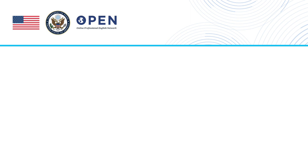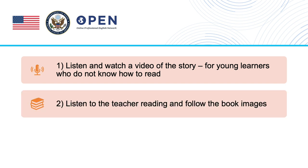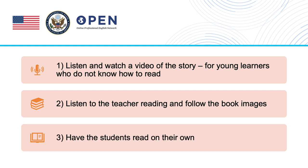Depending on the level of your students, you can choose one of the following options: one, listen and watch a video of the story for young learners who do not know how to read; two, listen to the teacher reading and follow the book images; or three, have the students read on their own.